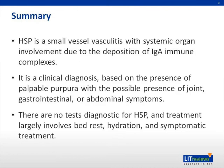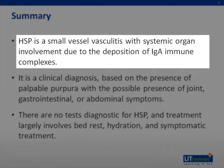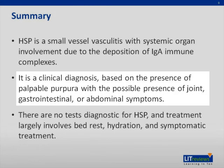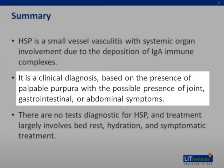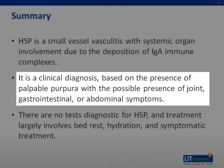In summary, HSP is a small vessel vasculitis with systemic organ involvement due to the deposition of IgA immune complexes. It is a clinical diagnosis based on the presence of palpable purpura with the possible presence of joint, gastrointestinal, or abdominal symptoms. There are no tests diagnostic for HSP, and treatment largely involves bed rest, hydration, and symptomatic treatment.